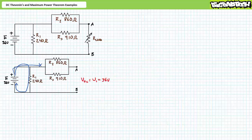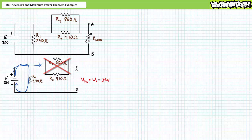Let's first solve for ETH, the Thevenin's equivalent voltage. To solve for ETH, one removes the load resistor from the nodes and determines the open circuit voltage. The removal of the load resistor prevents any current from traveling through R2 and R3 — with no current traveling through them, no voltage is dropped across R2 and R3, and they can be effectively removed from consideration. The modified circuit is essentially R1 and the voltage source, so R1 experiences all the voltage drop. The open circuit voltage is 36 volts. This is the Thevenin's equivalent voltage, ETH.